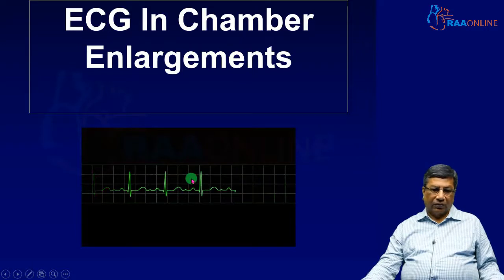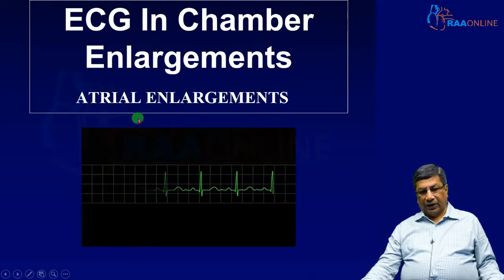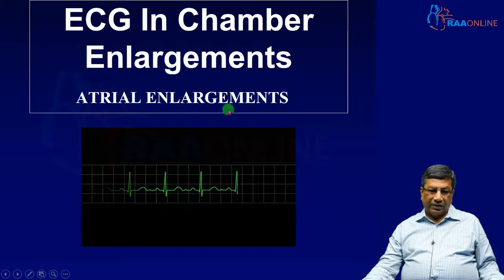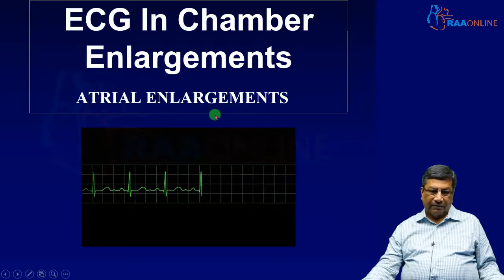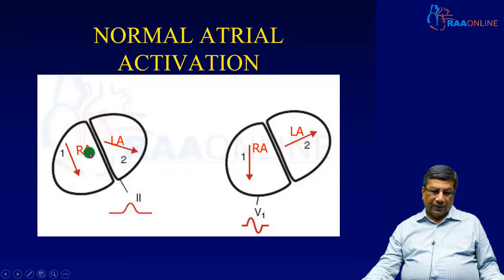First, we are going to look at chamber enlargement in the form of atrial enlargement — left atrial enlargement or right atrial enlargement. In normal atrial depolarization, both atrial depolarization impulses travel inferiorly.